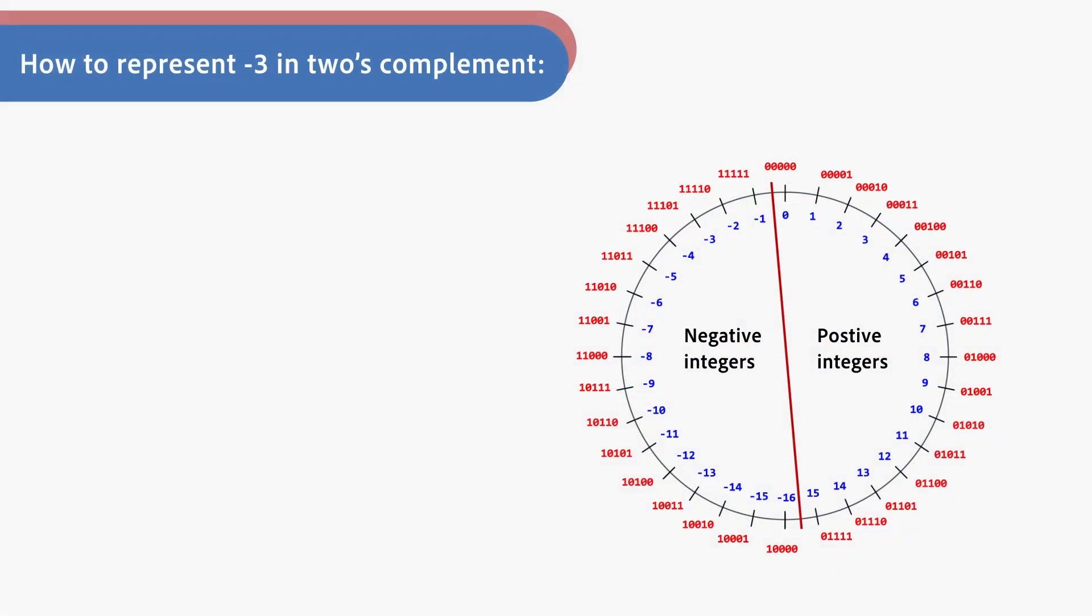For example, suppose we want to find out how to represent negative 3 in two's complement. First of all, we translate positive 3 to binary.